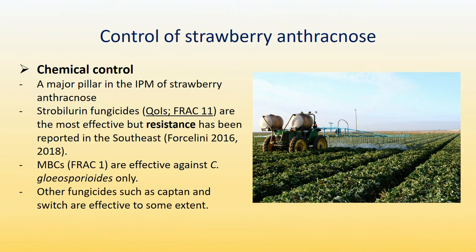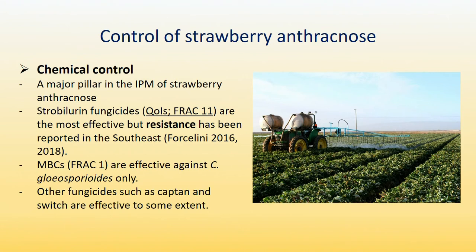Control of strawberry anthracnose: chemical control has been a major method for management. Strobilurin fungicides, FRAC 11, are the most effective, but resistance has been a big concern and has been reported in the southeast. We also detected resistance to this chemical group in isolates from our region — from Maryland, Virginia, and Pennsylvania. We had about 30% of isolates that are resistant to strobilurins.